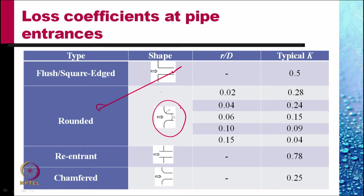For a re-entrant pipe, one shown here, the value of k is quite large, 0.78.